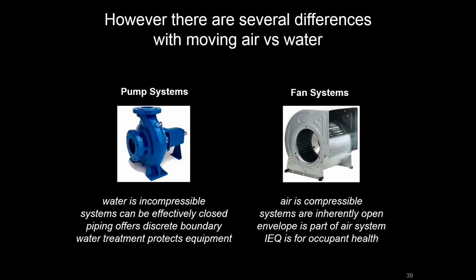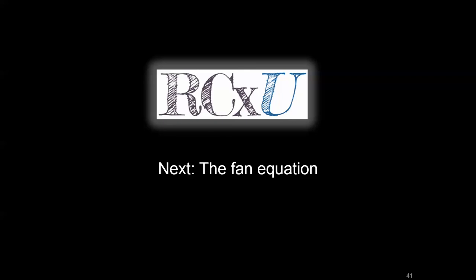With pumps, you may send treated water through the system to protect equipment. With fans, air filters protect equipment but indoor environmental air quality must also be contended with. With pumping systems, there are only a few configurations commonly seen in the field — primary-secondary and variable volume systems. With airside systems, however, there are many classifications based on how distribution is set up, where the air handling unit is located, and the different approaches it can take. We'll get into how to classify airside systems, but first we'll delve into the fan equation to quantify the fan energy used.